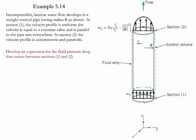In section 1 the velocity profile is uniform and equal to a constant value parallel to the axis everywhere. In section 2 the velocity profile is axisymmetric and parabolic.